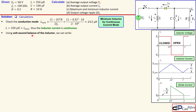Using the volt-second balance of the inductor from the waveform graph, we can set up an equation relating output voltage to input voltage VS. The equation is VS times DT plus VO times (1-D) times DT equals zero on average. Dividing out the period T and solving for VO gives an expression with a minus sign — confirming the negative output voltage from a positive input voltage characteristic of the buck-boost converter.